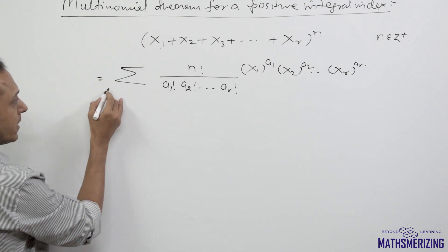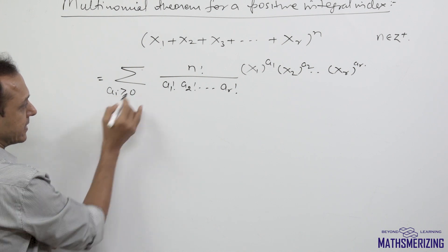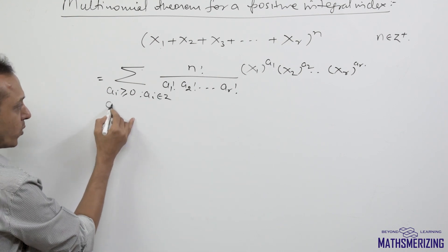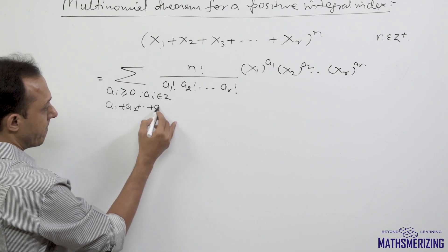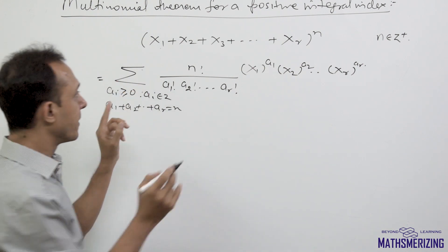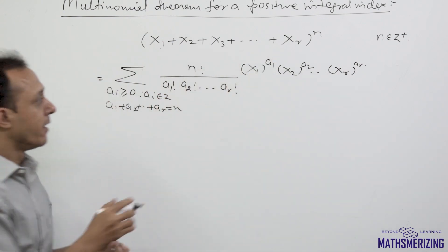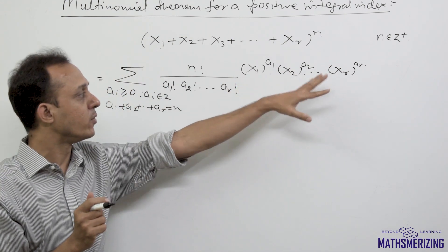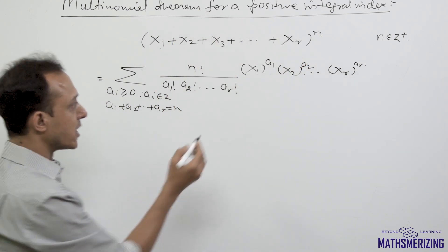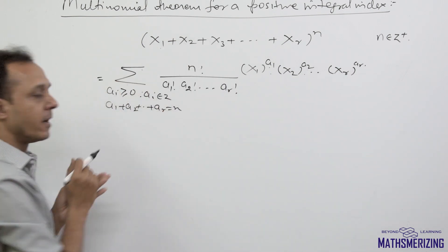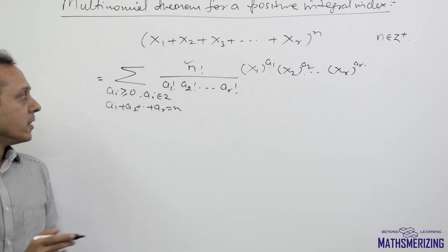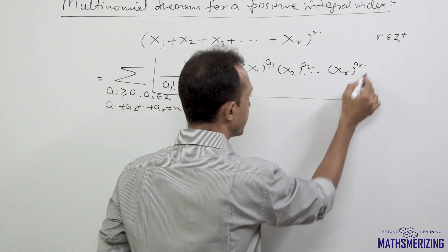This is expressed as a summation of all terms where each ai is greater than or equal to 0, ai is an integer, and most importantly, a1 plus a2 plus ar should equal n. When expanding x1 plus x2 plus xr to the power n, all powers a1, a2, ar must be non-negative integers, their sum must equal n, and the coefficient is factorial n upon factorial a1 factorial a2 factorial ar. This is called the general term of the multinomial expansion.